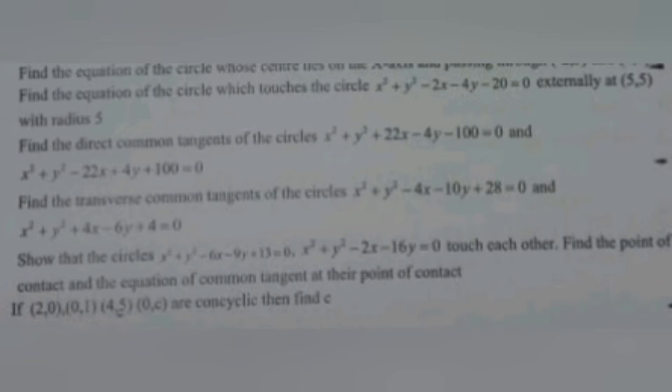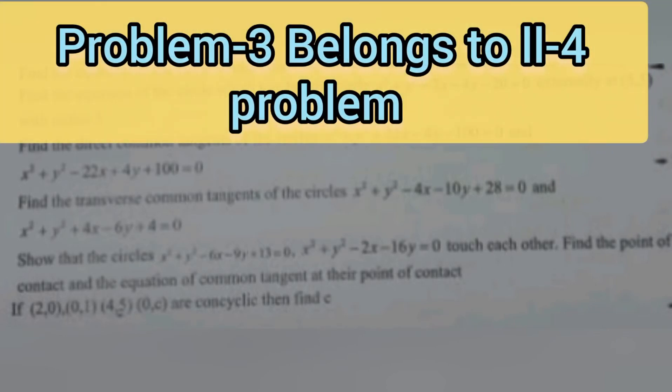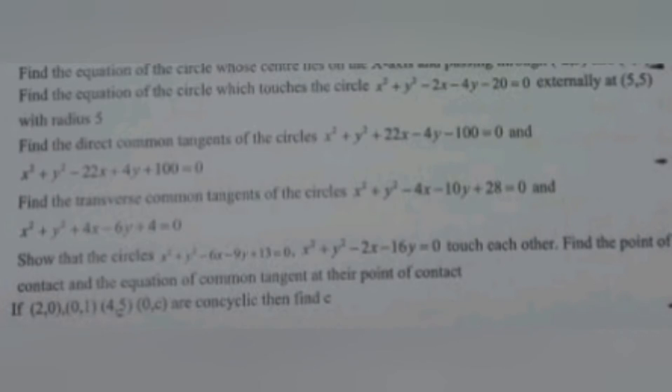The third problem is: find the transverse common tangents of the circles x² + y² - 4x - 10y + 28 = 0 and x² + y² + 4x - 6y + 4 = 0. This is also an important problem of transverse common tangents. This problem belongs to Exercise 1E, Roman number 2, question number 4, and is also a very very important problem in IP examination.